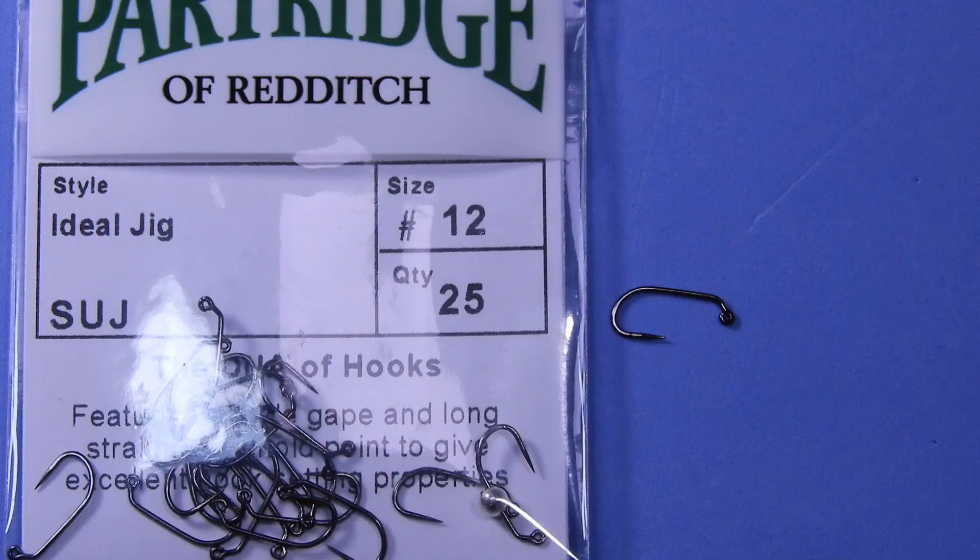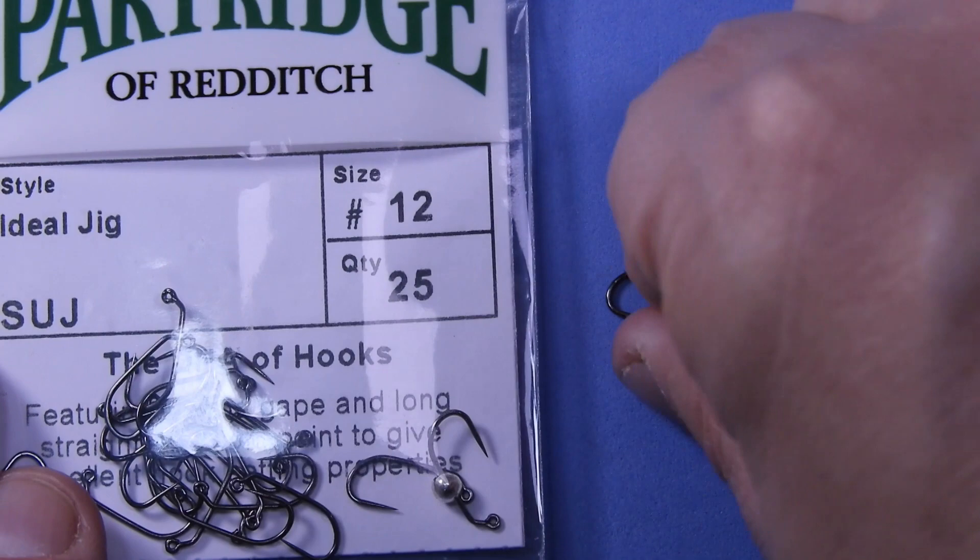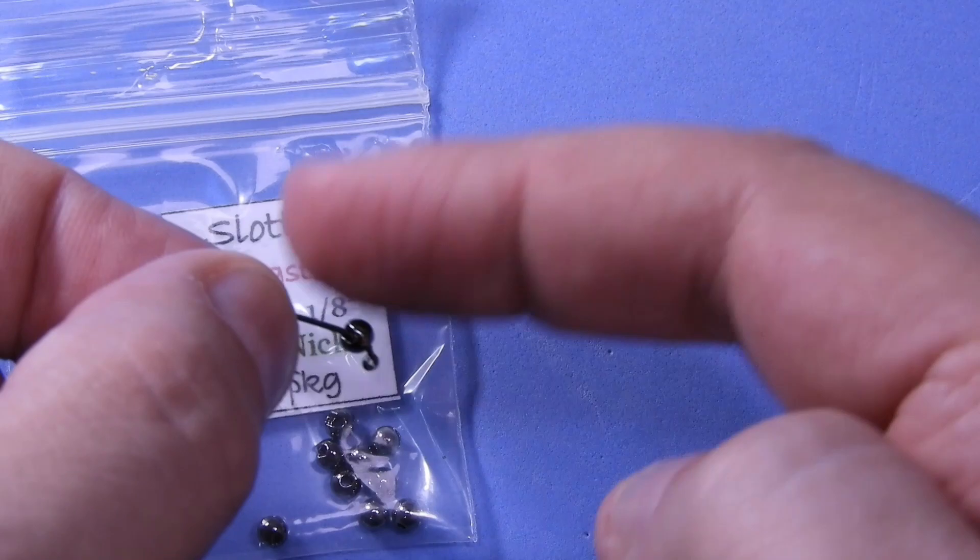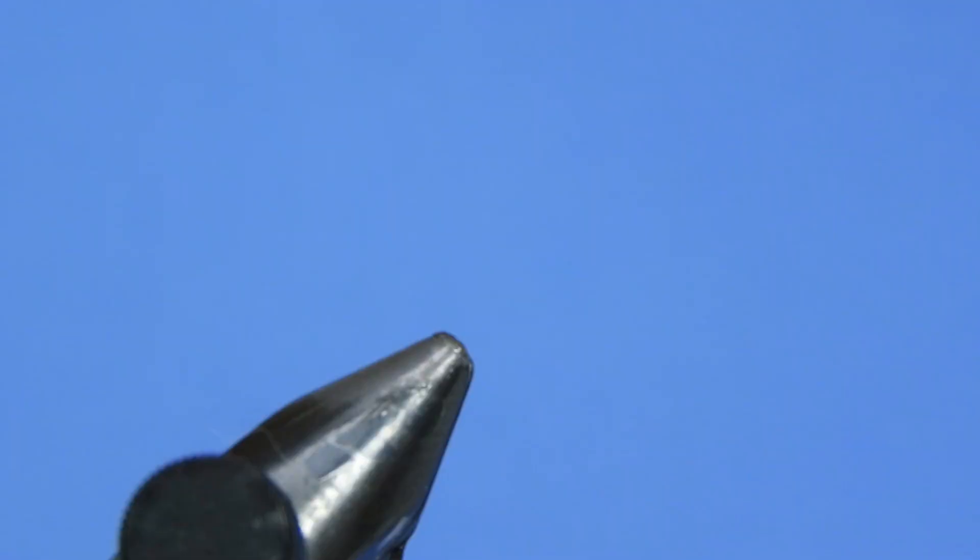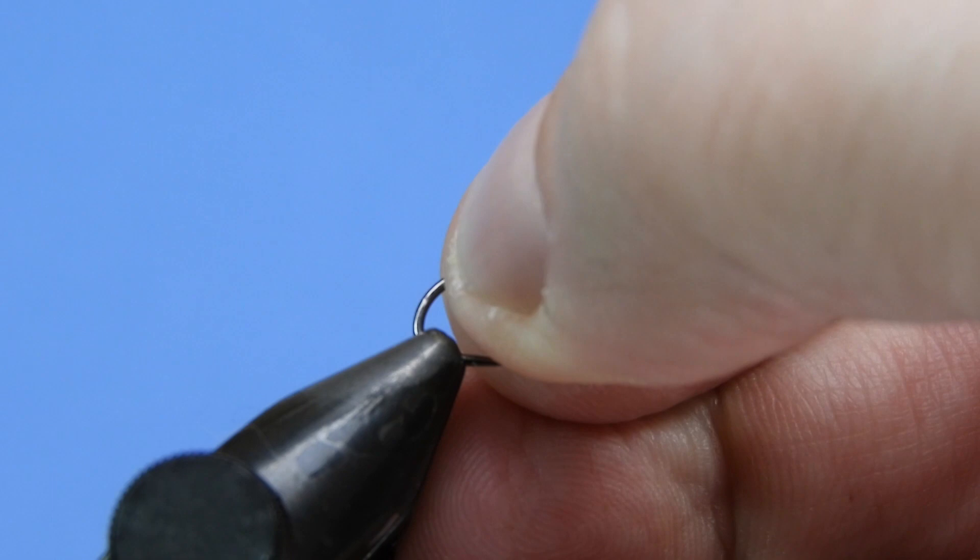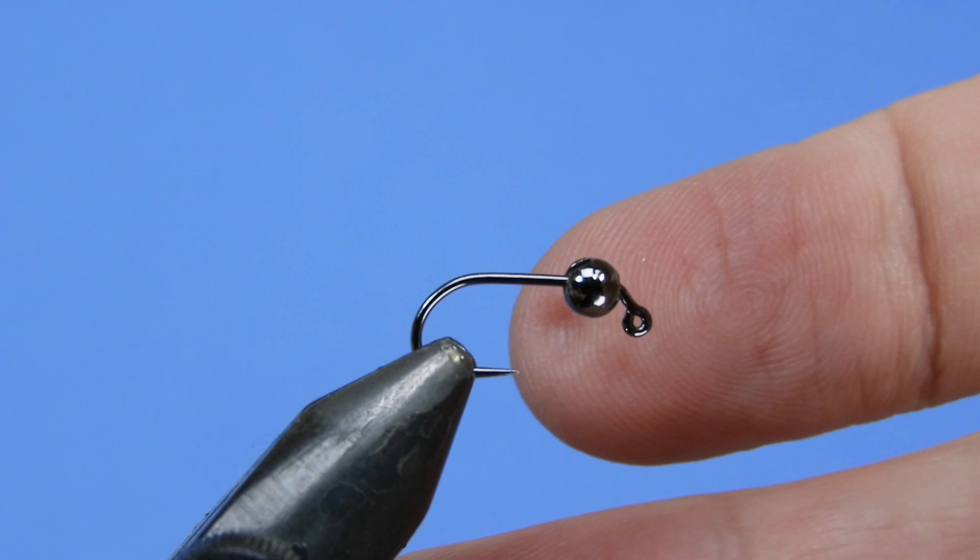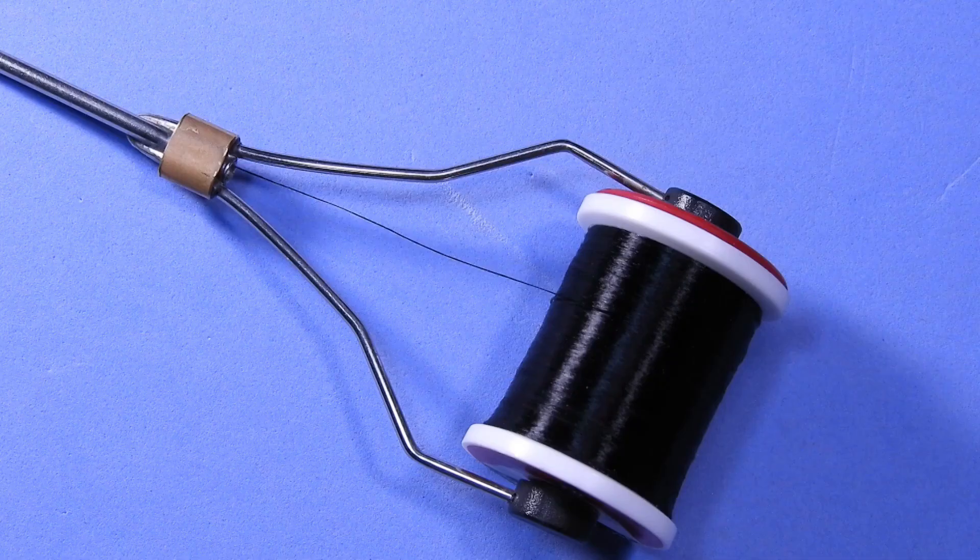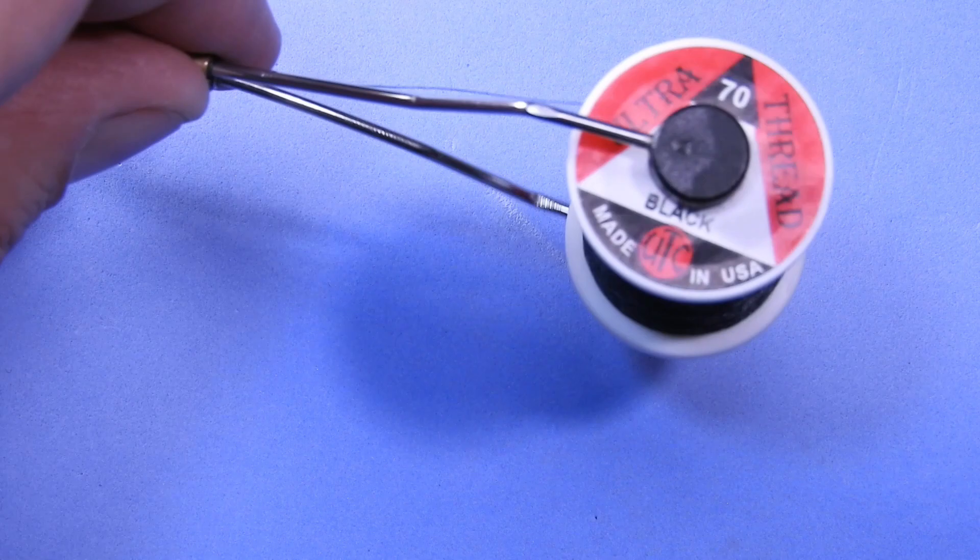All right, so let's get started. I'm going to need a new hook and a bead in the vise. I'm going to be using some Partridge SUJ hooks size 12 and a 3.5 millimeter bead. I'm going to be using a black nickel in this case and I've sprung for some slotted beads, so those will help the fly turn over a little bit. You just want to make sure you turn it so that the bead's going to sit forward as much as possible. You can kind of see how it tips forward there.